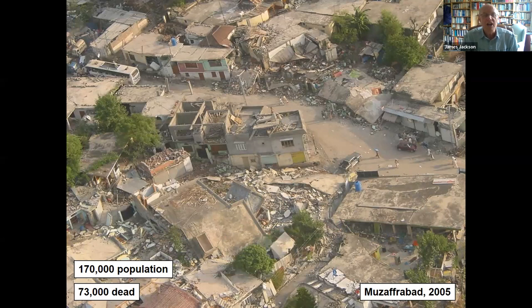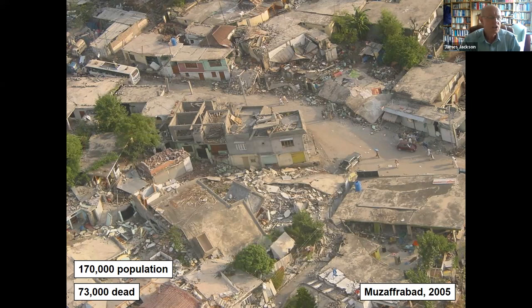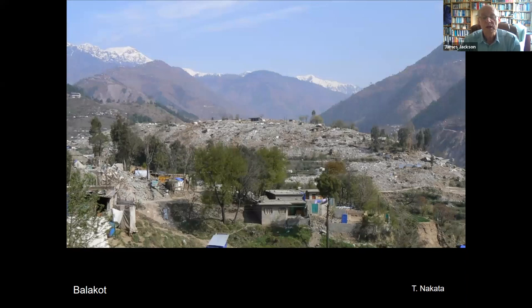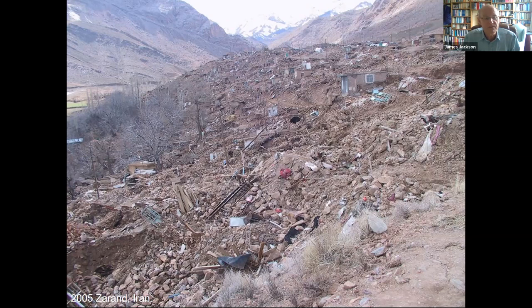Looking at the edge where India bashed into Asia to make the Himalayas — here's a 2005 earthquake on the Pakistan-India border in Kashmir. Out of 170,000 people living in the region, 70,000 were killed — a horrendous fraction. The before picture of the town shows a building and trees in the foreground; the after picture shows complete destruction. Similar pictures come from Iran, where a comparable earthquake essentially wiped out an entire town — nothing left standing.